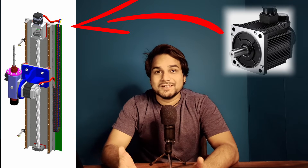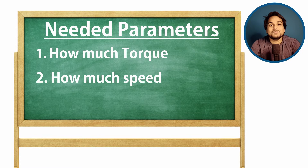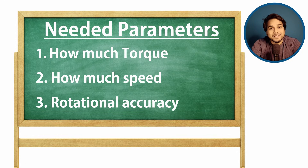So what are the parameters we have to calculate to define a spec of motor? From a mechanical design engineer's point of view: number one, how much torque is required for our system; number two, what should be the speed of the motor; and number three, how much accuracy we need in motor rotational angle. And from the electrical design engineer's point of view, the motor which can satisfy the mechanical design engineer's given parameters — very simple.